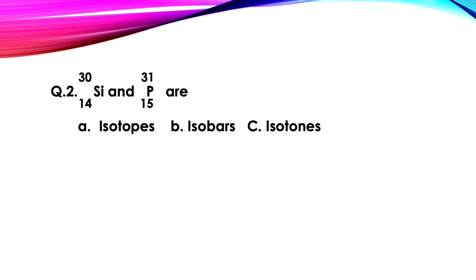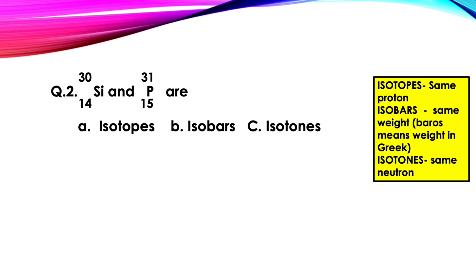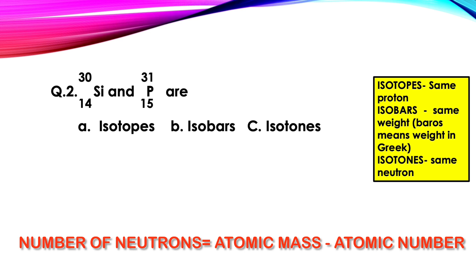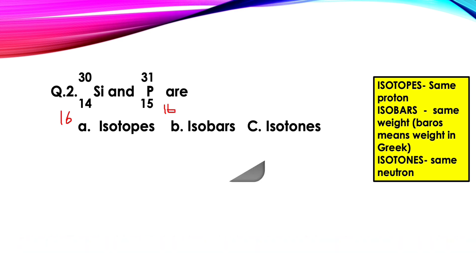For the second question, looking at silicon and phosphorus: their atomic numbers are different, so they do not have the same proton. For isobars they should have the same mass number, but silicon and phosphorus have mass numbers 30 and 31 respectively, so they are not isobars. Checking for isotones: 30 minus 14 gives silicon 16 neutrons, and 31 minus 15 gives phosphorus 16 neutrons. They both have the same number of neutrons, so they are isotones.